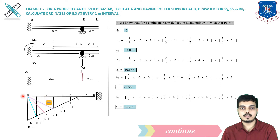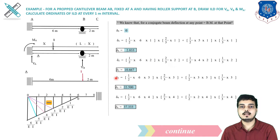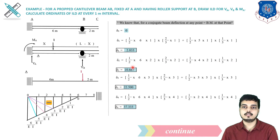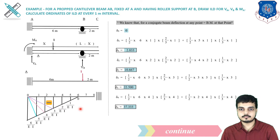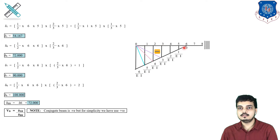Similarly for point 2: triangle 1 is (0, 6, 4, 0), giving 1/2 × 6 × 2 × 2/3 of 2; triangle 2 is (0, 4, 2, 0), giving 1/2 × 4 × 2 × 1/3 of 2. Solving gives delta 2. Similarly we can find delta 3, delta 4, and delta 5.